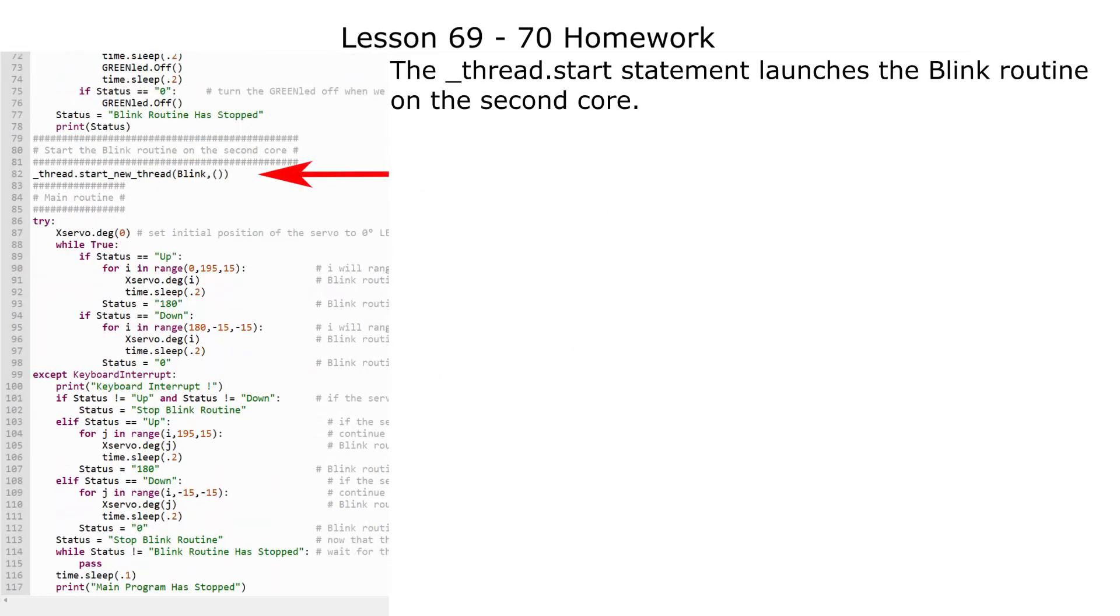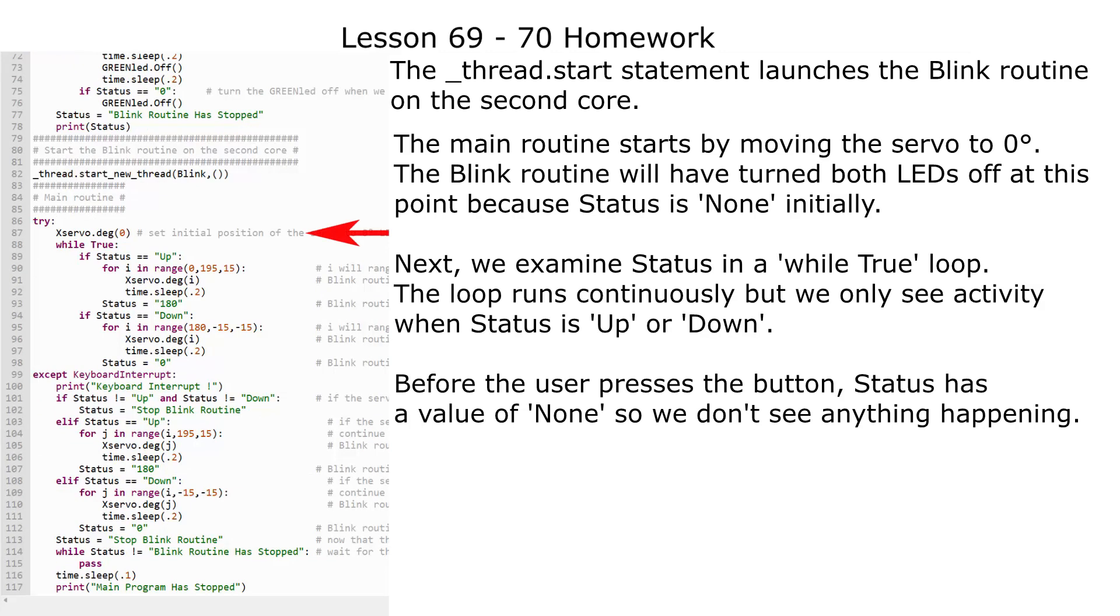The underscore thread dot start statement launches the blink routine on the second core. The main routine starts by moving the servo to zero degrees. The blink routine will have turned both LEDs off at this point because status is none initially.